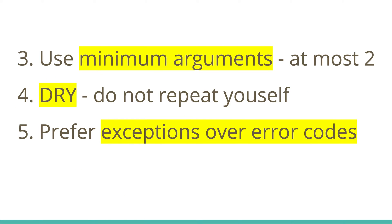The next tip is to use functions which have minimum arguments — at most two. The best case is one or zero. If you start using three or more arguments, you should question it and maybe even use a style check so that errors are thrown during review. Functions with multiple arguments are typically doing more than one thing because there are so many things to be done with so many arguments. Ensure you're writing functions that take at most two arguments. It's also harder to test and maintain functions with multiple arguments.